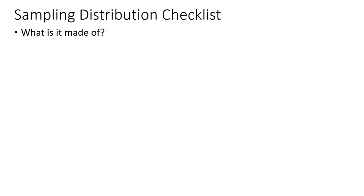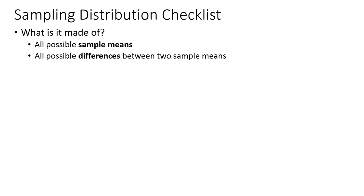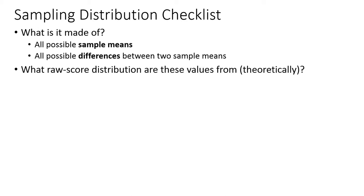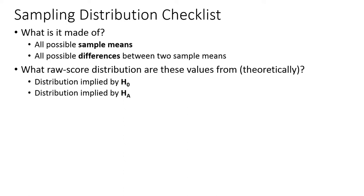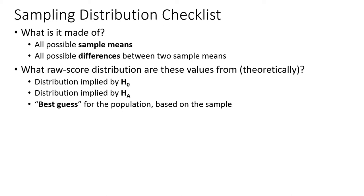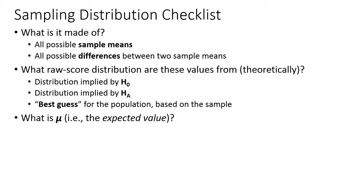These are the kinds of things you should know about a sampling distribution. You should know what it's made of — is it made of all possible sample means, or all possible differences between two sample means? What raw score distributions did these originally start as? Was it the distribution implied by the null hypothesis, the alternative hypothesis, or for confidence intervals, the best-guess raw score distribution based on what we find in the sample? And what is the mean of this sampling distribution — what's the expected value on average?